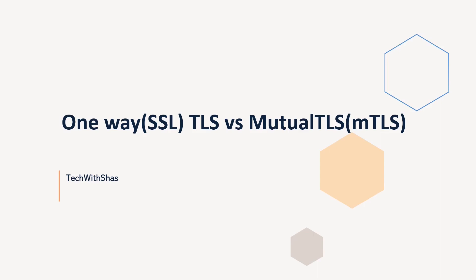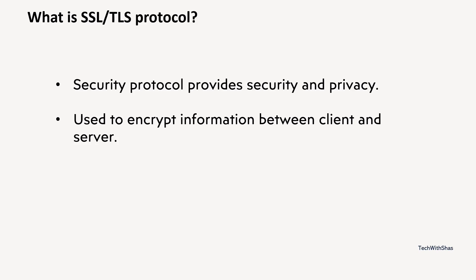So let us see what infrastructure is required to enable TLS communication, so that we encrypt data whenever we are interacting with websites or other applications over mobile. TLS and SSL are protocols which provide the security and privacy of our data. Whenever we are sending any data over the internet, they are used to encrypt information. Even if somebody can snoop into our conversation, they cannot make out what data is being transported to the sites or mobile application.